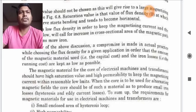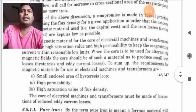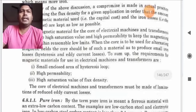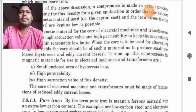To sum up the requirements for magnetic materials for use of electric machines, the core of electric machines and transformers are as follows: Small enclosed area of hysteresis loop, high permeability, high saturation value of flux density.